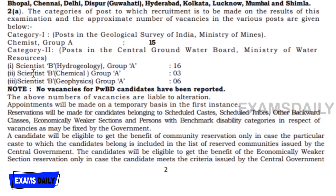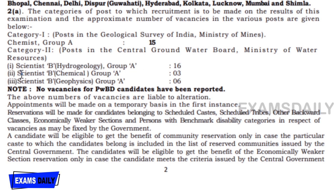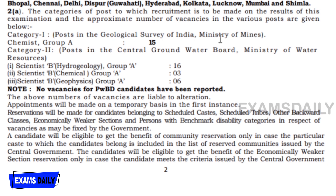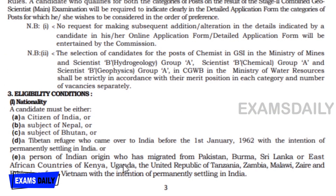The categories of posts are: Scientist B Hydrogeology Group A with 16 vacancies, Scientist B Chemical Group A with 3 vacancies, and Scientist B Geophysics Group A with 6 vacancies. Category 1 posts are in the Geological Survey of India, Ministry of Mines; Category 2 posts are in the Central Groundwater Board, Ministry of Water Resources. Vacancy details for PwBD candidates are given in the description box link.